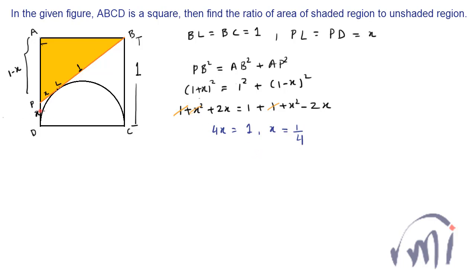So if X is 1 by 4 that means 1 minus X will be equal to 3 divided by 4 and the area of triangle will be equal to 1 divided by 2 multiplied by base, base if you take as AB is 1 multiplied by height, height of the triangle is AP which is 3 divided by 4. So this will be equal to 3 divided by 8.